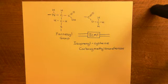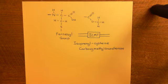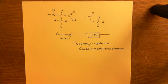Welcome to this next video in which we are discussing the RAS proteins. We have discussed that there are four different types of RAS protein, and that they all have a CAAX box structure at their carboxyl terminus.